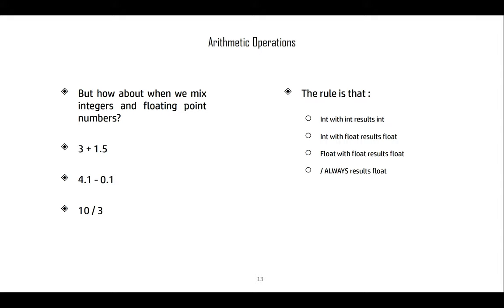What happens when we mix integers and floating point numbers, like 3 + 1.5, 4.1 - 0.1, or 10 / 3? The rule is: int with int results in int, except division always gives float. Int with float results in float. Float with float results in float.